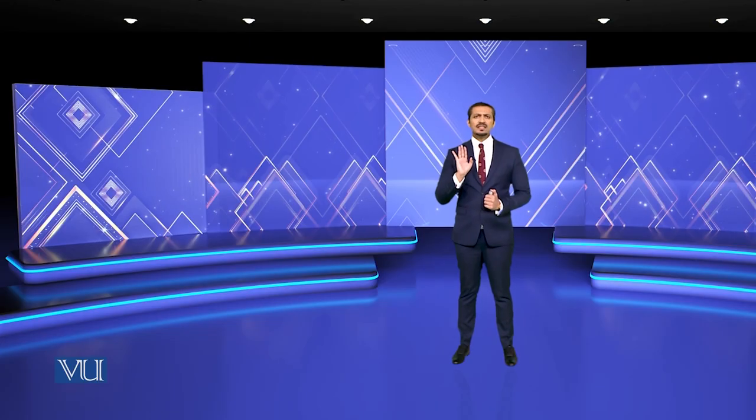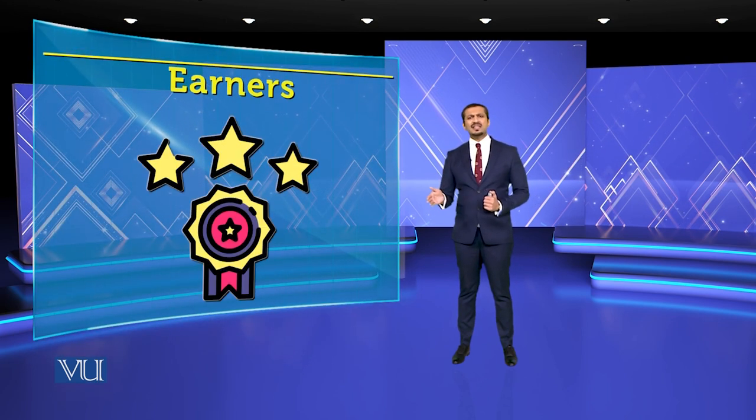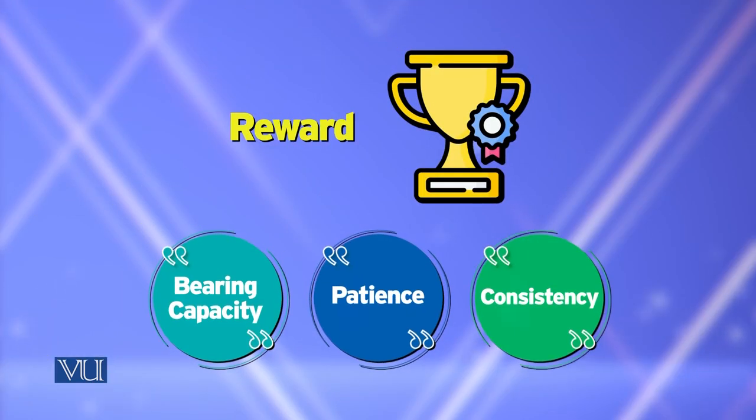Doosri type ke log jo hain woh sirf business oriented aur profit motive wale log hain — unko sirf investment samajh aati hai aur us se double ya dugna ka profit samajh aata hai. Teesri type jo hai woh earners ki hai: unhon ne apna time diya, utne hi paise liye, aur us ke baad un ka koi existence ya affiliation ya relation, is business ke saath koi apna taluq — spiritual, qalbi, zehni, ya roohani — koi taluq nahi hoti. Toh reward sirf us ko milega jis ke andar bearing capacity hai, jis ke andar patience hai, jis ke andar consistency hai.